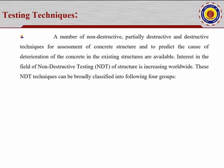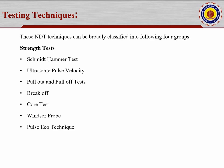Various testing techniques can be used — a number of NDT, partially destructive, and destructive techniques for assessment of concrete structures are available to predict the cause of failures. Interest in the field of NDT of structures is increasing worldwide. These NDT techniques can be broadly classified into four groups. Group one is strength tests: the rebound hammer test (Schmidt hammer test), and the Ultrasonic Pulse Velocity test — shortly termed UPV or PUNDIT (Portable Ultrasonic Non-Destructive Indicating Tester). These are carried out as per IS 13311 codal conditions.